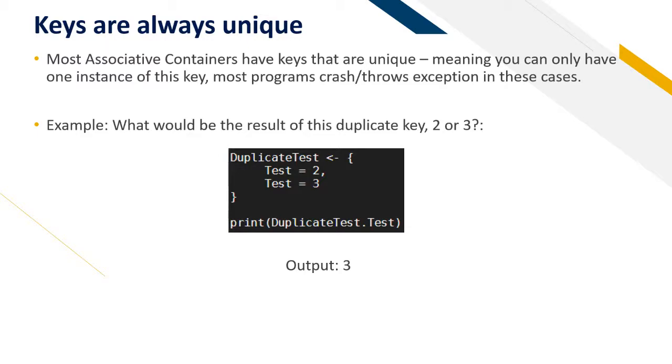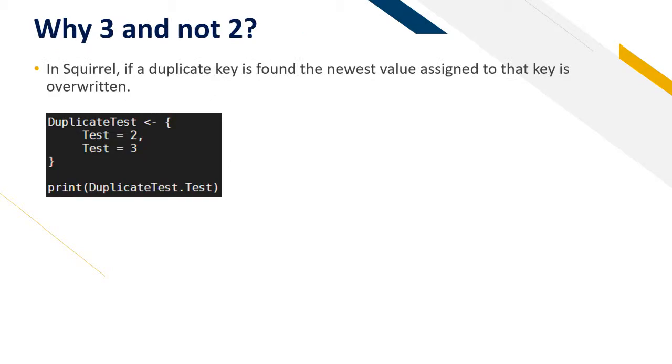Let's find out why this happens. In Squirrel, if a duplicate key is found, the newest value assigned to that key is overwritten.